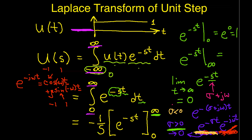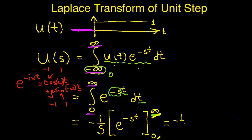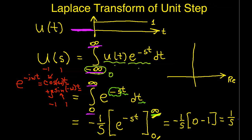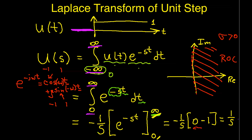To summarize: the lower limit of the integral gives 1, while the upper limit gives 0 as long as sigma is greater than 0. So the integral is minus 1 over s times (0 minus 1), which is just 1 over s. This is the functional form of the Laplace transform of the unit step. The region of convergence for this Laplace transform is, by definition, the set of values of s in the complex plane for which the limit as t goes to infinity exists. The requirement is that sigma be greater than 0, so the region of convergence is the shaded area where sigma is greater than 0.